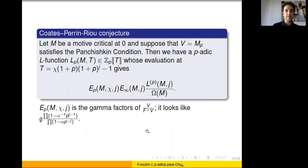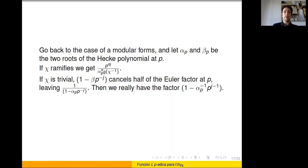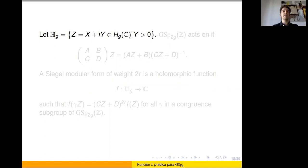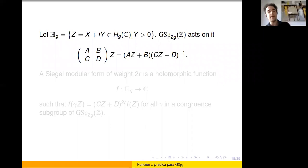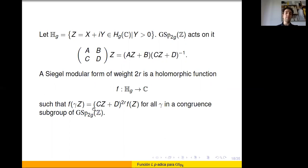Today's main topic is p-adic L-functions for Siegel modular forms. The Siegel upper half-space H_g is the set of complex g by g symmetric matrices Z with positive definite imaginary part. For g equal to 1 this recovers the Poincaré upper half-plane. The group GSp_{2g}(Z) acts by linear fractional transformations. A Siegel modular form of weight r is a holomorphic function on H_g satisfying a transformation formula for all gamma in a congruence subgroup of GSp_{2g}(Z).